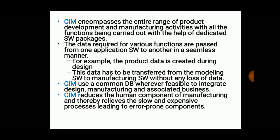CIM reduces the human component of manufacturing, relieving slow and expensive processes that lead to error-prone components. CIM-produced components are defect-free because automated systems never get tired or bored. In contrast, when a human produces a set of components, the first and last components will have significant variability due to concentration lapses and breaks between intervals — these are natural causes of error.